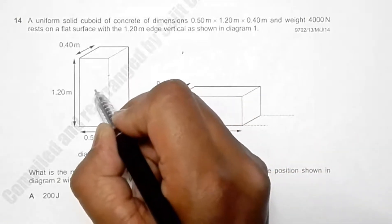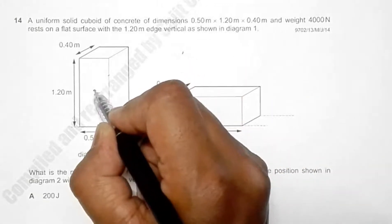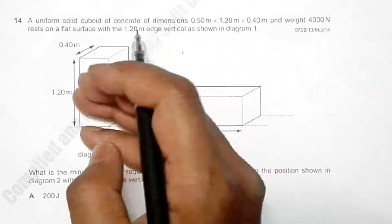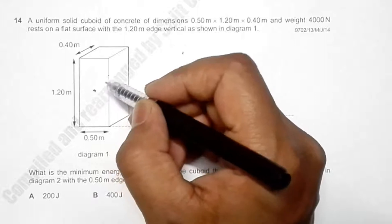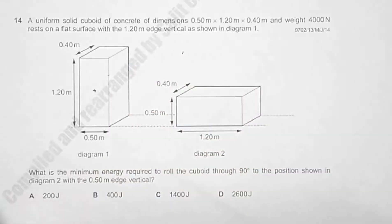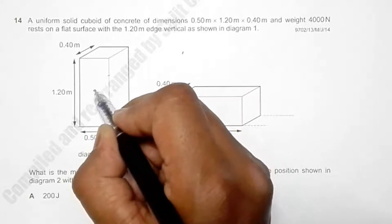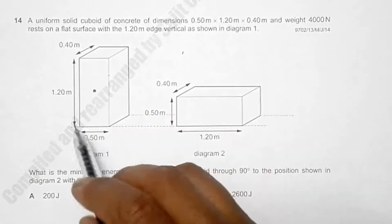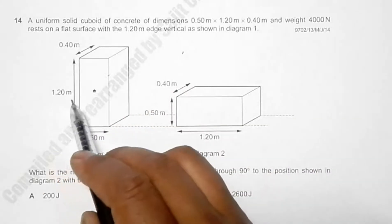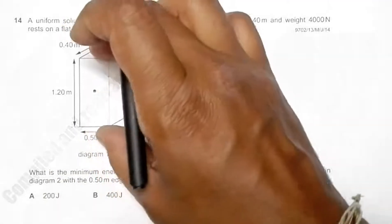This weight acts through the centre of gravity (CG). Since it's a 3D figure, the CG is somewhere inside. Observing from the side, the CG is at the centre and the weight acts through that point. The longest side is vertical as shown, and the question asks for the minimum energy required to roll the cuboid.